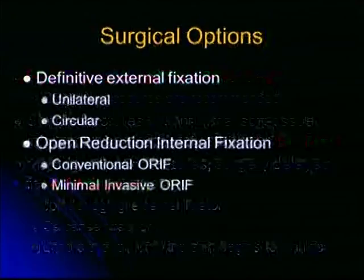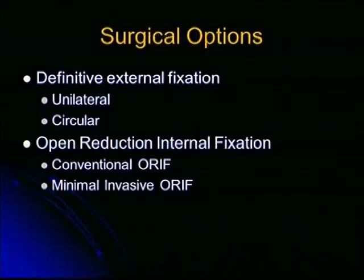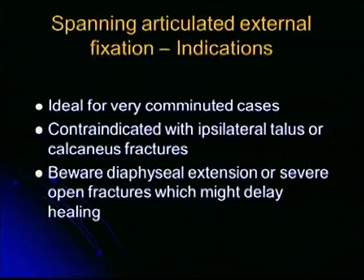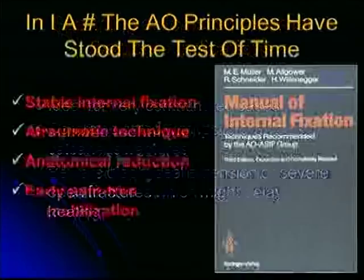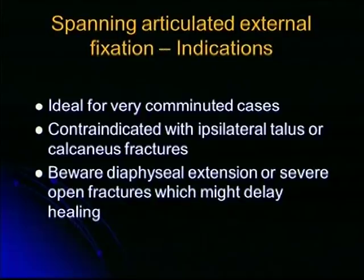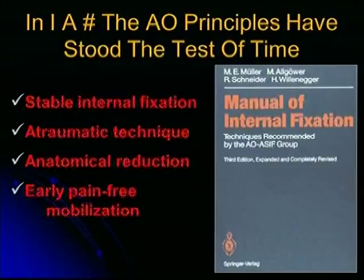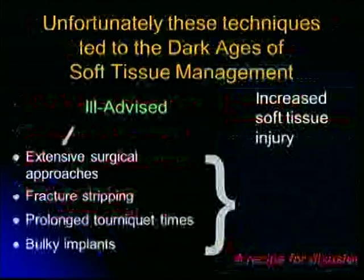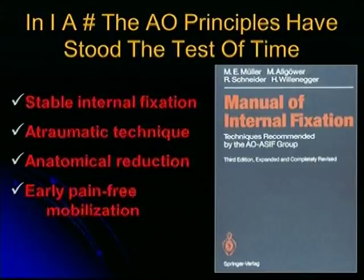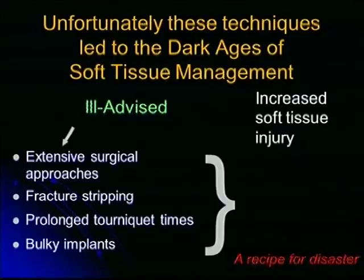Surgical options are definitive external fixation with unilateral or circular fixators, or open reduction and internal fixation using conventional plates or minimally invasive techniques. Spanning articulated external fixation is ideal for very comminuted cases where ORIF may not give the desired results, and is contraindicated with ipsilateral talus and calcaneal fractures. The AO principles of stable internal fixation, atraumatic technique, anatomical reduction, and early pain-free mobilization have stood the test of time for articular fractures. Unfortunately, these techniques led to the dark ages of soft tissue management — ill-advised extensive surgical approaches, prolonged tourniquet times, and bulky implants led to increased soft tissue injury and were a recipe for disaster.